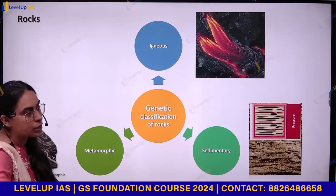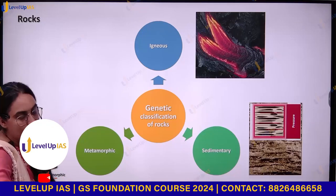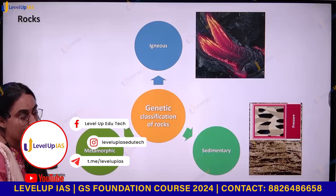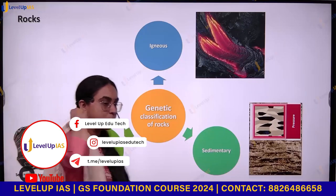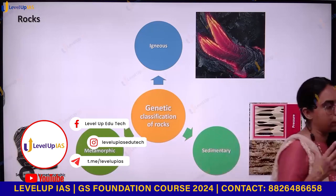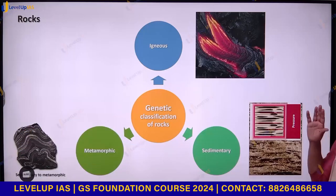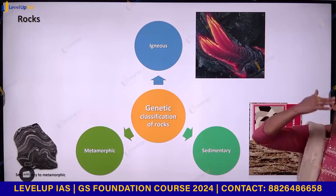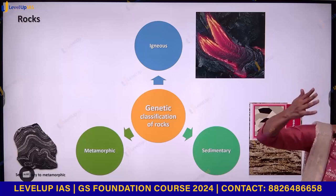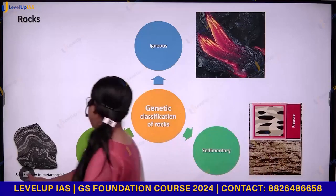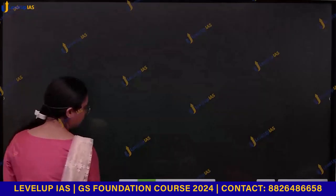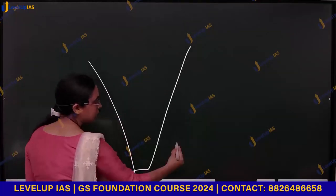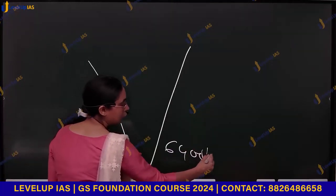Igneous means fire. Igneous rocks are formed because of the cooling and solidification of magma. They can be formed within the earth's crust or above the earth's crust. The earth goes up to 6,400 km.